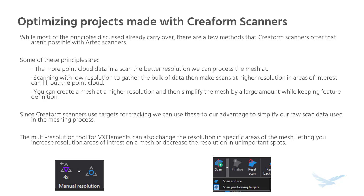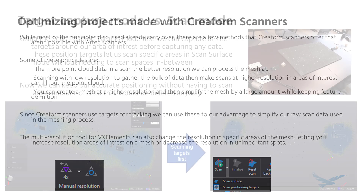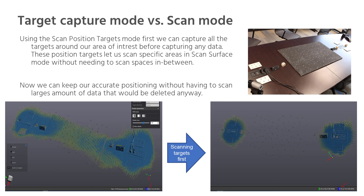For Creaform scanners, most of the principles we've been talking about do still carry over. Creaform scanners, however, offer some possibilities over Artec scanners for reducing processing times and improving final mesh quality. Targets allow us to capture positional data without needing to scan point data at the same time. This makes scanning larger objects easier and we can align dense point cloud data much easier than we would if we had to do it by feature definitions. The multi-resolution tool within VX Elements can change the resolution of our final mesh in specific areas — useful to reduce the polygon count of a mesh except for select areas, or to decrease the resolution of simple surfaces. Targets are used with Creaform scanners, especially the HandyScan series, to maintain positionings. Instead of capturing data and targets at the same time, we can scan all of our targets first, then capture the raw data after. If you have a large object and only need to know where two features are relative to one another, scanning all the data between isn't really necessary.